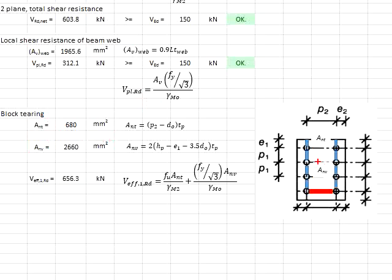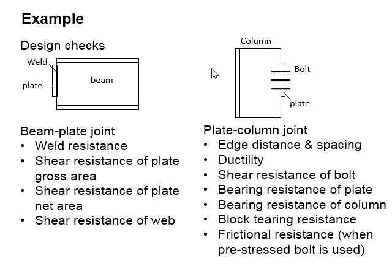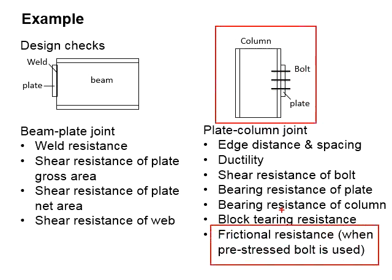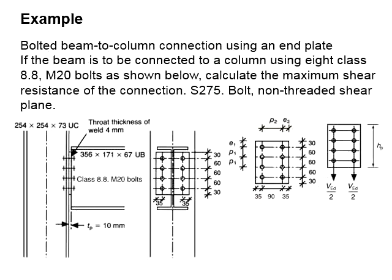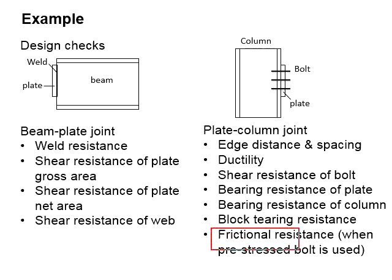Substitute into the equation here, you will obtain the block tearing capacity as 656.3 kilonewtons. The last item for this connection is the frictional resistance. If pre-stressed bolts were being used—in this case normal bolts are being used—therefore you do not need to check for this. Thank you.